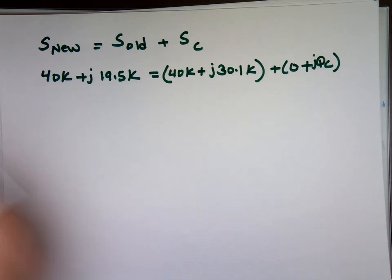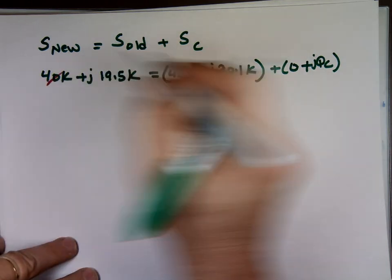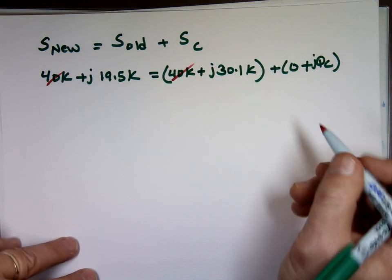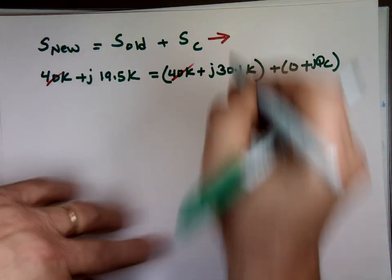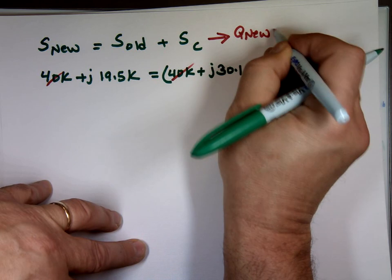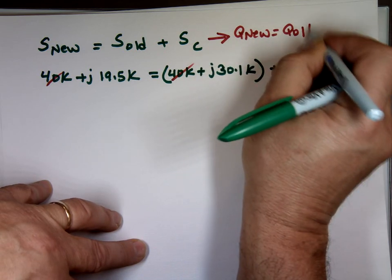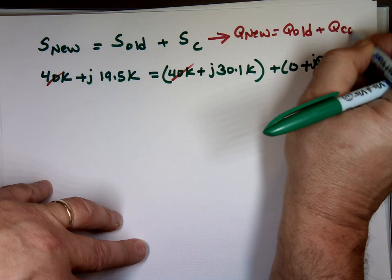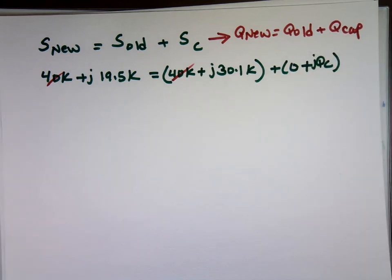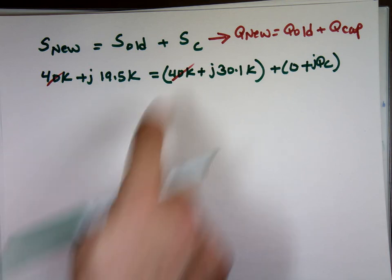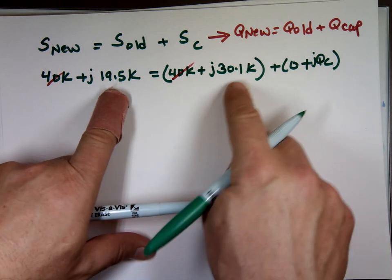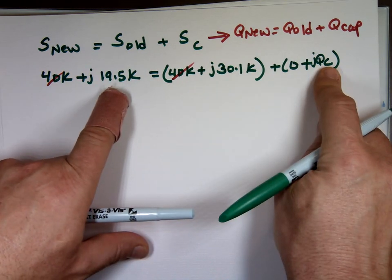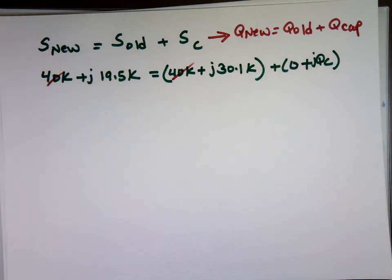So what do you notice about this? That's the 40k's will cancel each other. That's why a lot of times this equation actually being shrunk a little bit. To what? To Q nu equals Q old plus Q capacitor. A lot of times you see it written that way because you know the real portion is going to cancel. So what's left? That's the Q nu. That's the Q old. And that's the Q for the capacitor. So instead of even putting the real, they go to that.